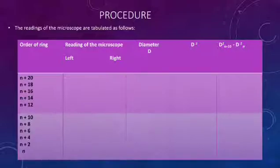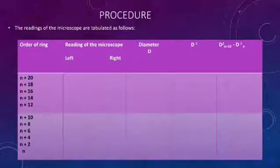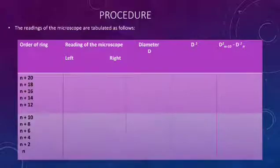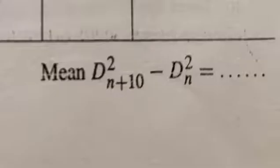The readings of the microscope — left and right — are recorded. The difference between them gives the diameter. We can then calculate D² as d_(n+10)² minus d_n². The mean value of d_(n+10)² minus d_n² is tabulated.